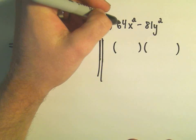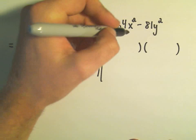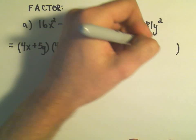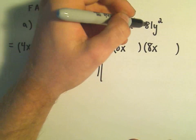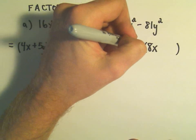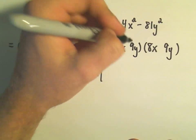It's the same thing. I just take the square root of 64x squared, I would get 8x and 8x. I do the same thing with 81y squared, I would get 9y and 9y.